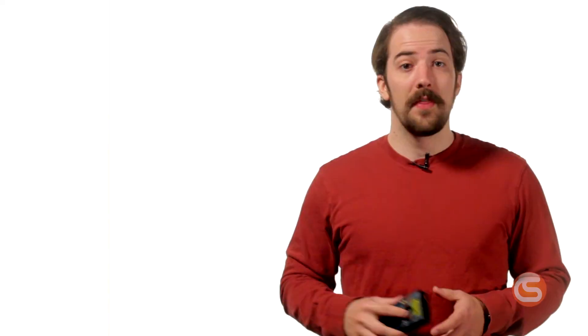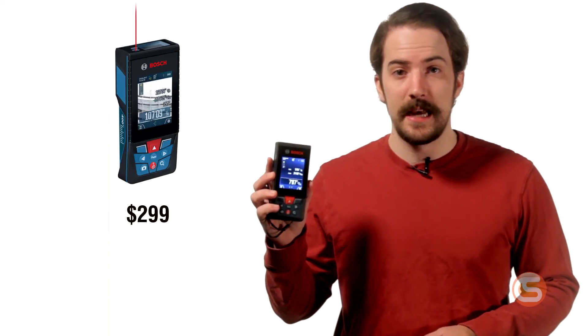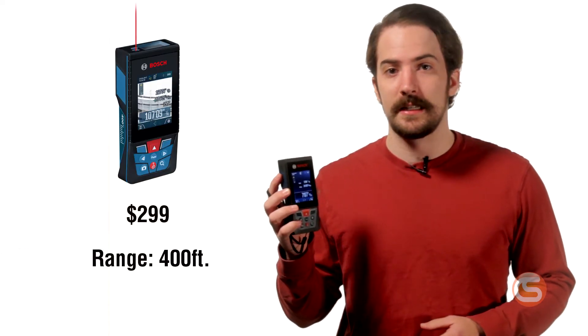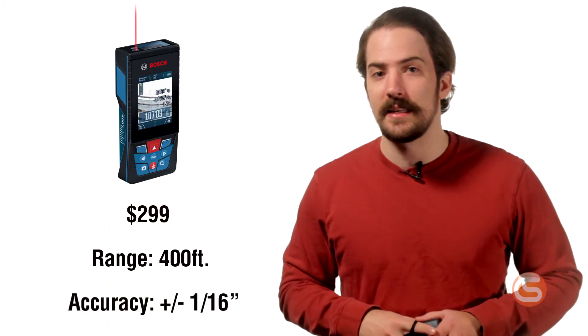Now these next two categories are really what you pay for in a laser rangefinder, and those are distance and accuracy. The Blaze 400, as you may have guessed from its namesake, has a 400 foot max distance with plus or minus 1/16th of an inch accuracy.